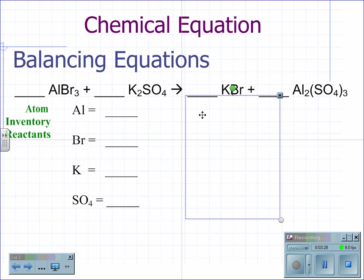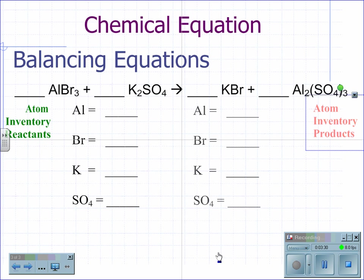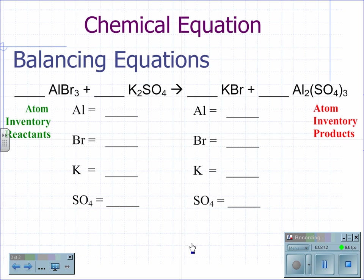This will make it a little easier in balancing when I see that the polyatomic sulfate appears on both sides. I try to keep the order of the inventory in the same order — aluminum, bromine, potassium, then sulfate on both sides. This allows me to see where the imbalances are when I try to balance the equation.